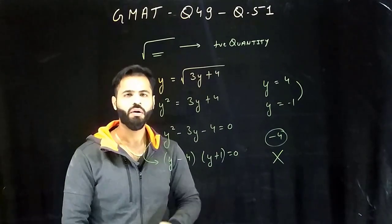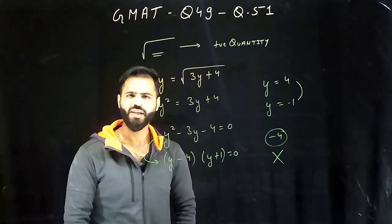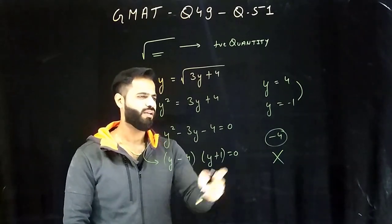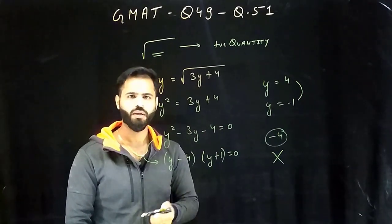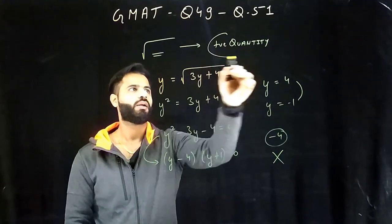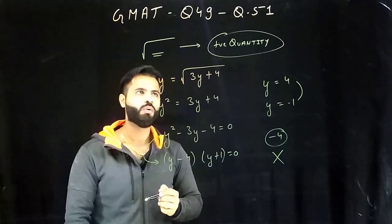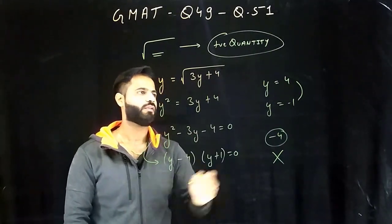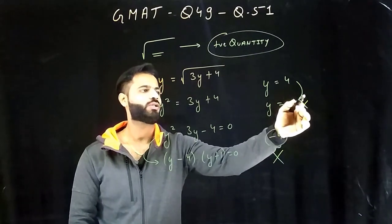Now the question asks us product of all the possible values of y, and 4 into minus 1 looks like minus 4. But if you mark this answer you are absolutely wrong. You'll come back happy but ultimately you're gonna regret it because you did not know the concept. Look here, square root of a quantity is always positive, so y equals to minus one has to be neglected.